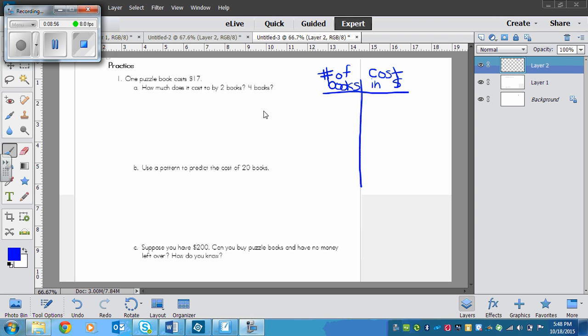All right, so you have solved and now we're going to do it together. So how much does it cost to buy 2 books or 4 books? Well, first of all, we know that 1 book, and you can see I've drawn a chart, 1 book costs $17.